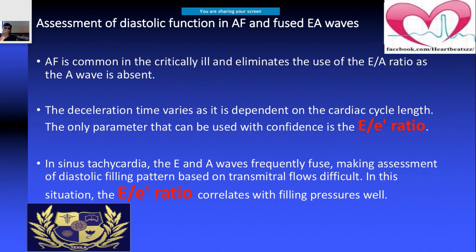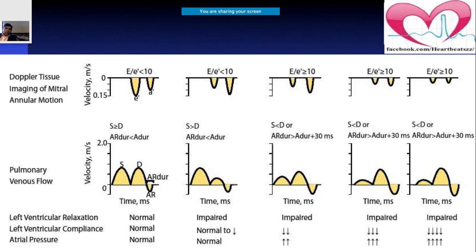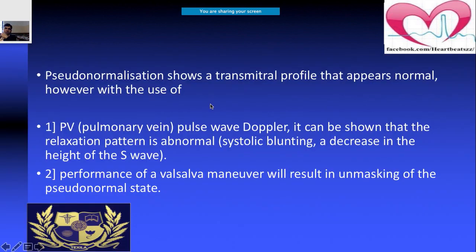During atrial fibrillation, when you cannot see the A wave, use the E/E' ratio to comment on diastolic dysfunction. Similarly, in sinus tachycardia, E and A waves may be almost fused. In those conditions as well, you can use the E/E' ratio to assess diastolic function.